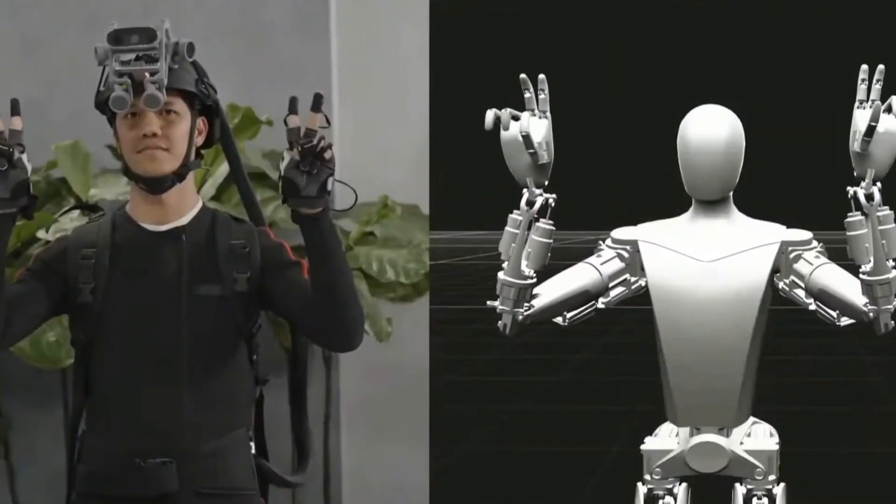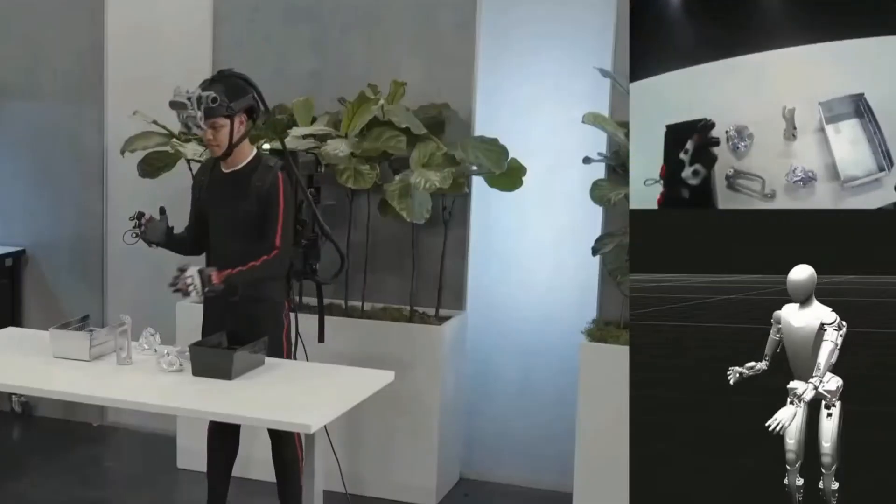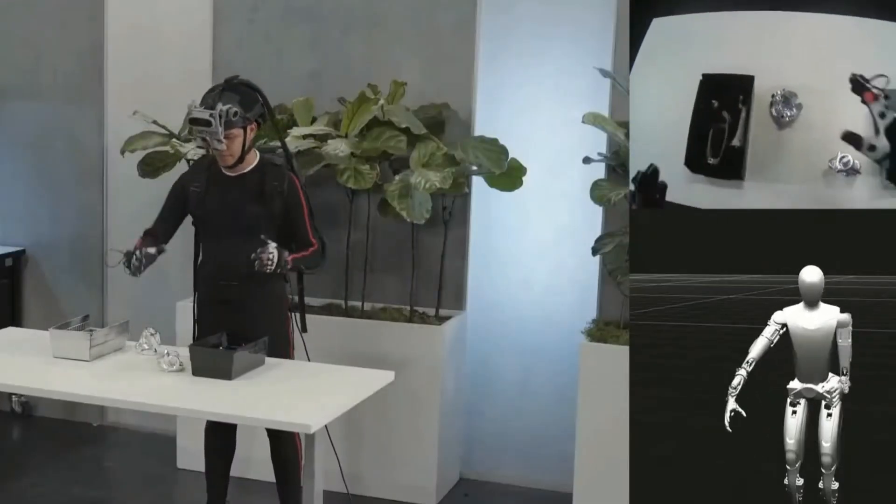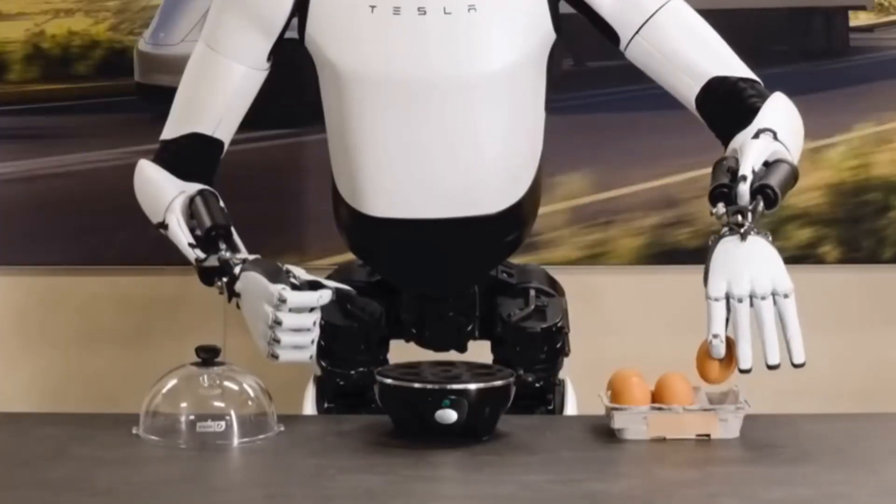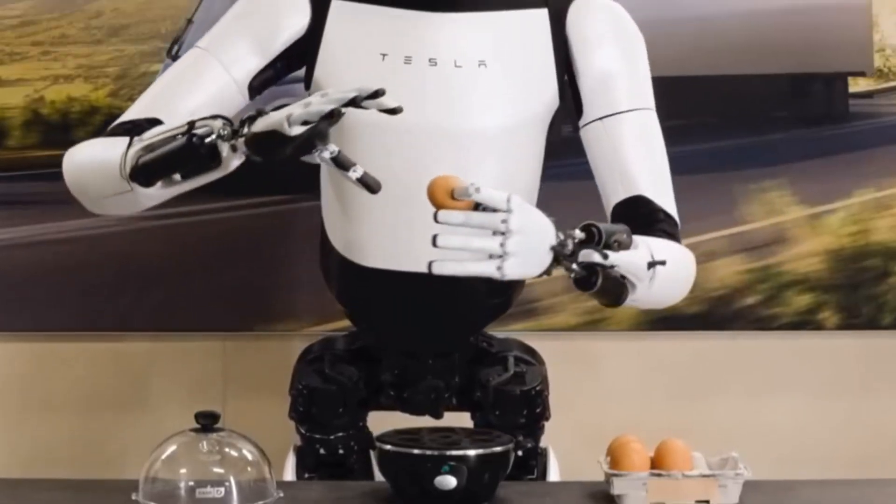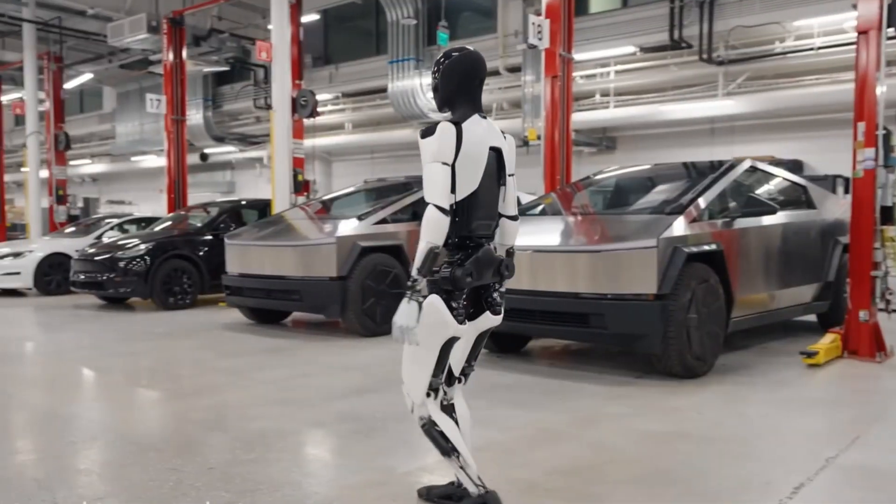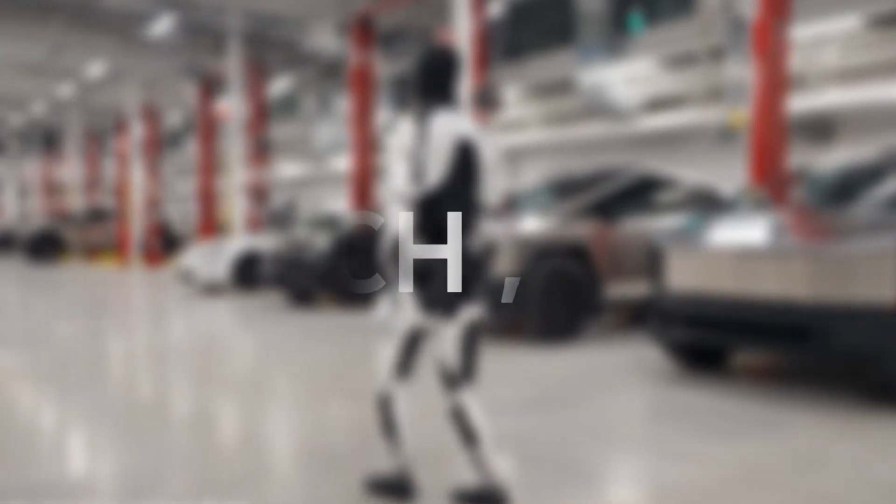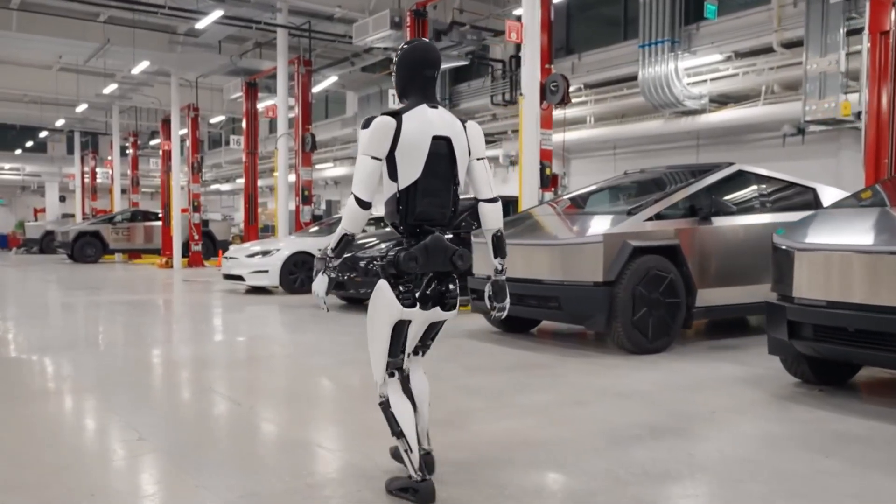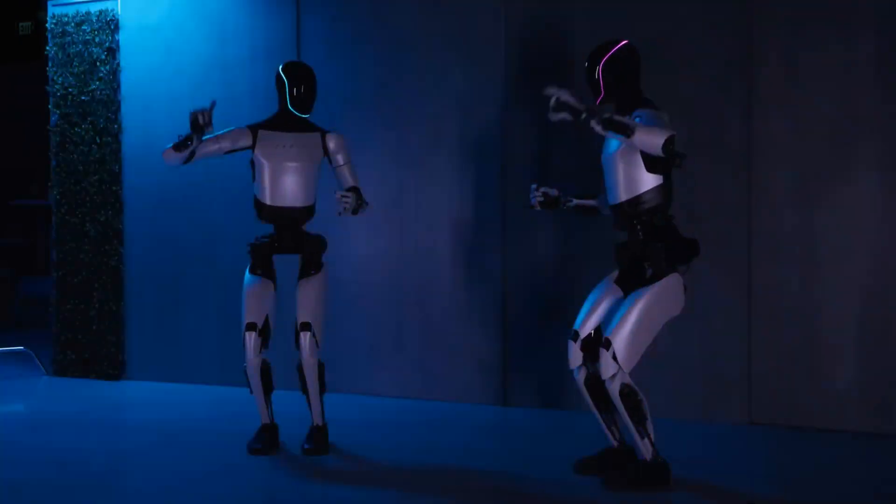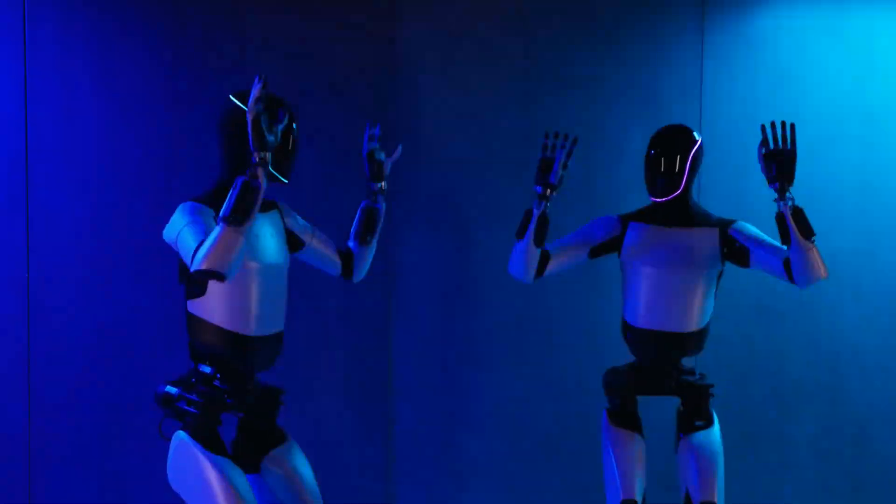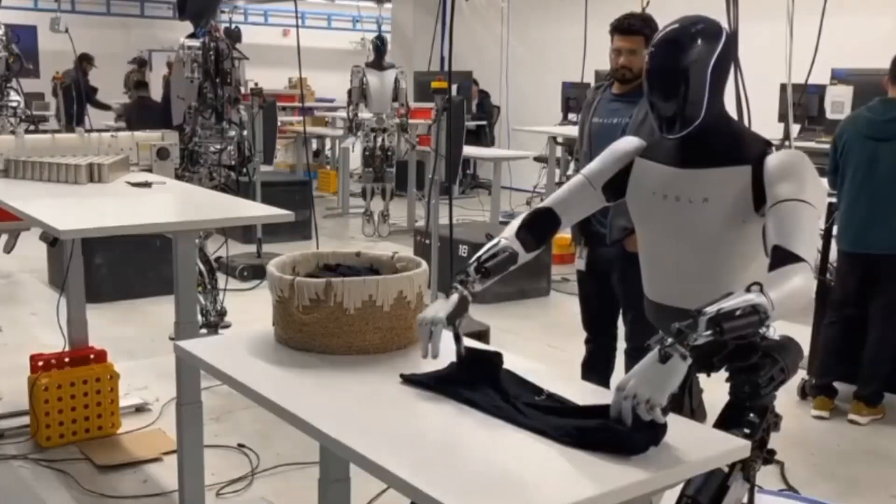Rewind a bit to Optimus' baby steps, early prototypes nicknamed the Bumblebee. But back then, they were more like robot toddlers, not quite ready for household chores. Fast forward to March 2023, and boom! Optimus Generation 1 arrives, a cooler, smarter version compared to the Bumblebee days. Sure, these robots got better, but the updates took their sweet time, happening every 7 to 9 months.